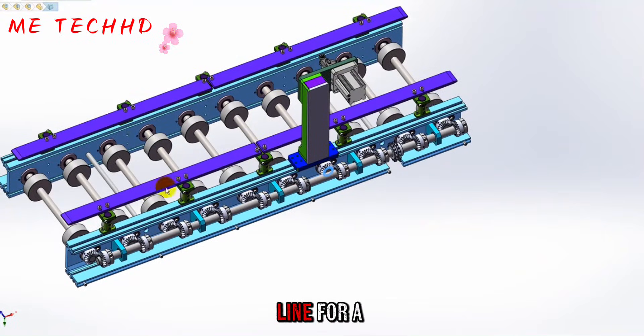So this is a production line for a cylinder block. The whole thing is like this. Thanks for watching.